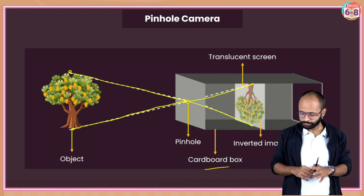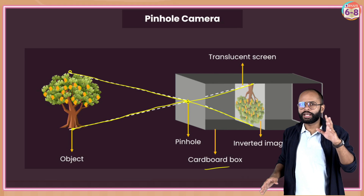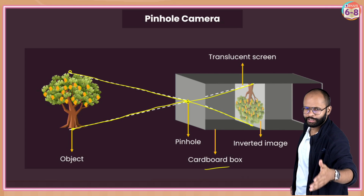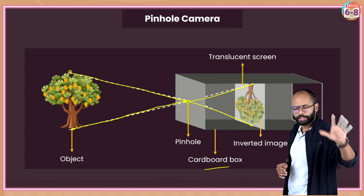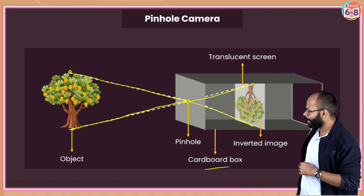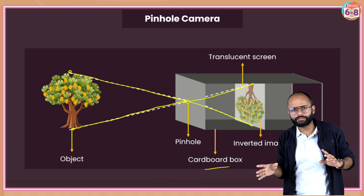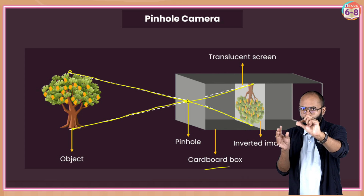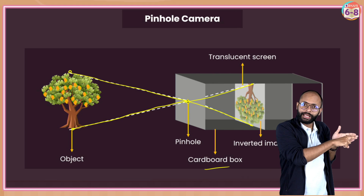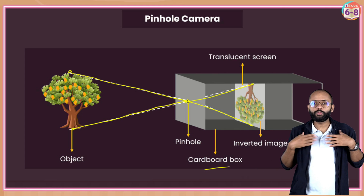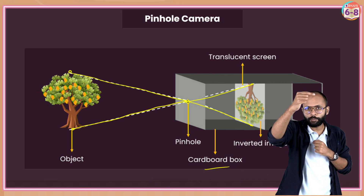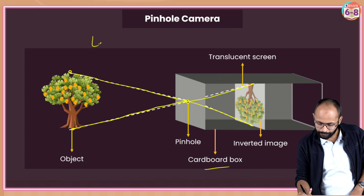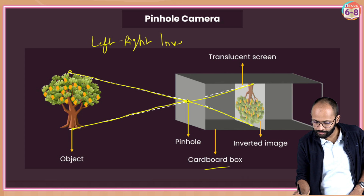One more important thing - a very common question I always ask students. You can see top-to-bottom inversion, that is for sure. But do we have a left-right inversion? If I raise my hand on this side, one light ray will come, pass through this hole and form an image over there. From this hand, one light ray will pass through this hole and form an image on the other side. So yes, there is a top-down inversion and also a left-right inversion.